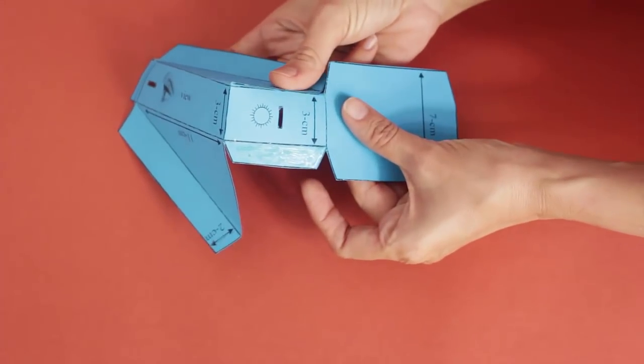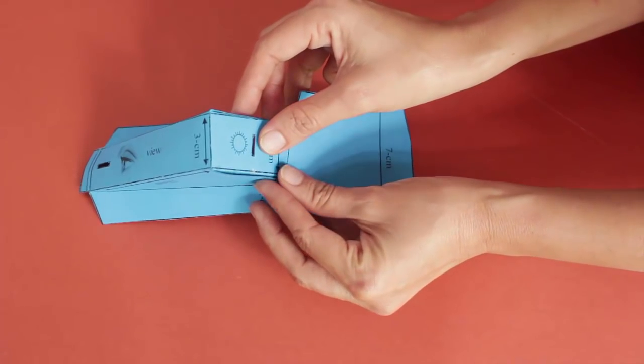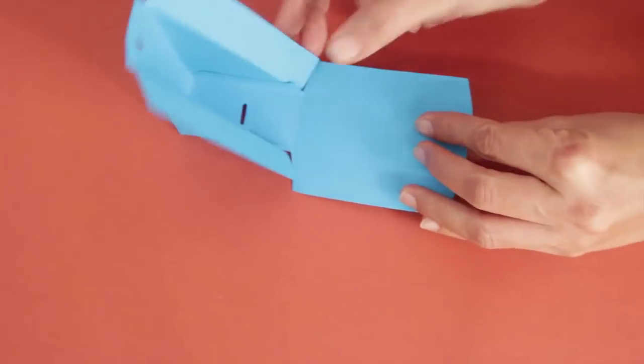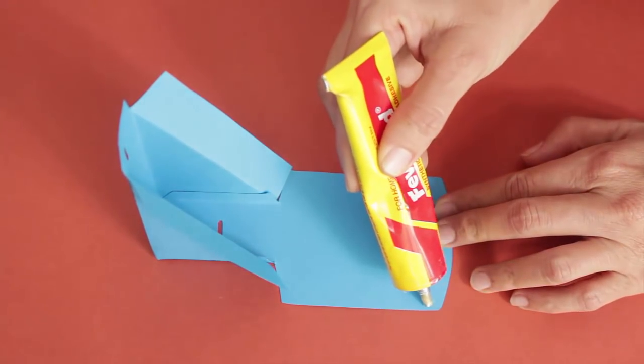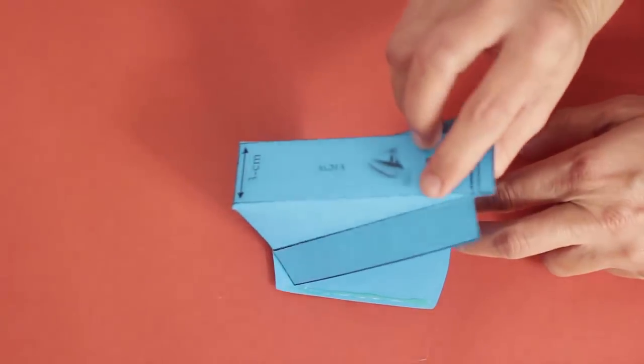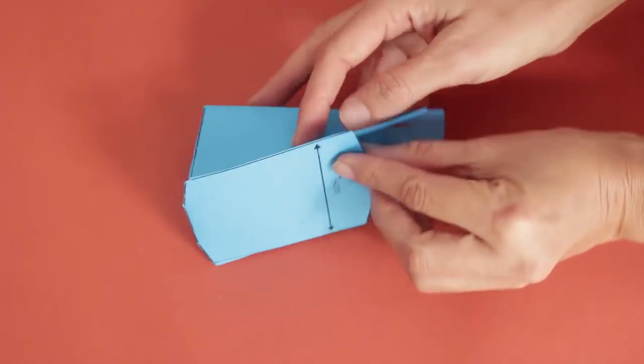Now the rectangular piece is the base. Apply glue on the margins of the space and stick it to the triangular box. Now this is the complete triangular box.